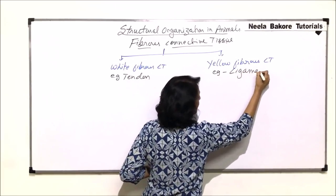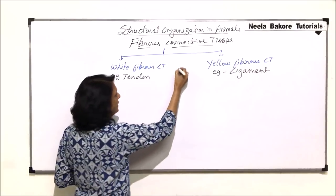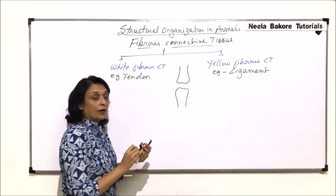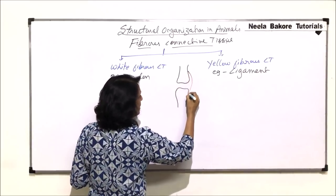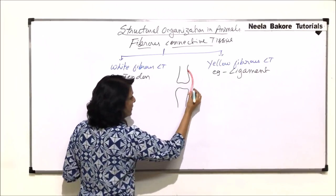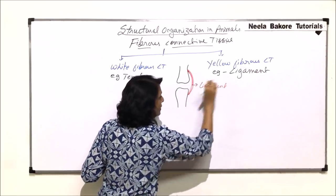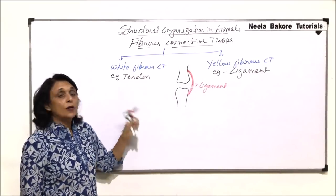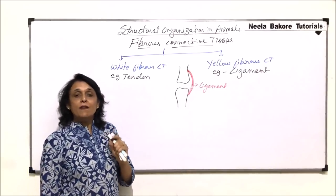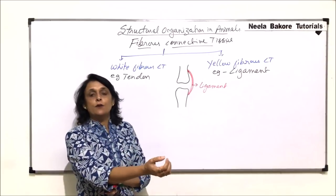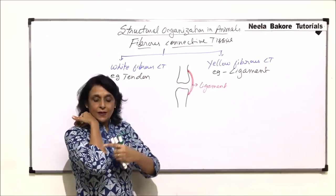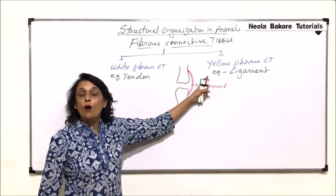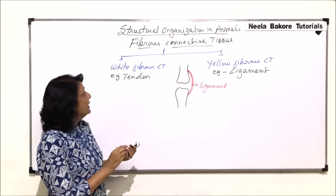The example of white fibrous connective tissue is tendon, and of yellow fibrous connective tissue the example is ligament. If we draw two long bones, the structure which connects bone to bone is the ligament. Ligament connects bone to bone at a joint, and this structure has to be elastic because whenever we move a joint — for example, at the elbow joint — the ligament connecting the two bones needs to stretch a little.